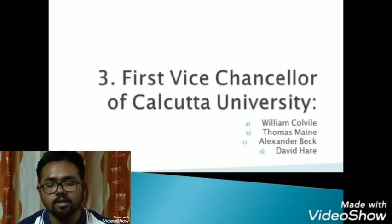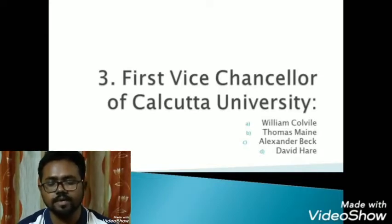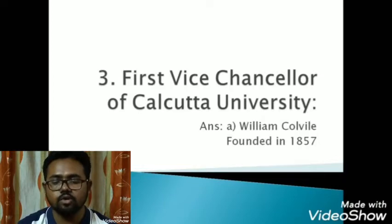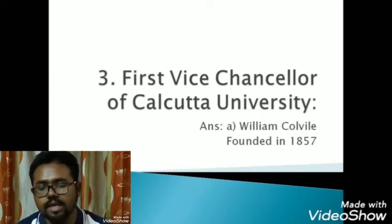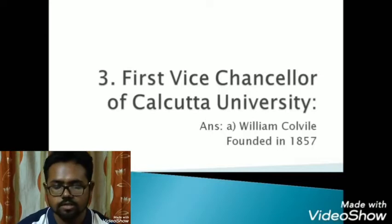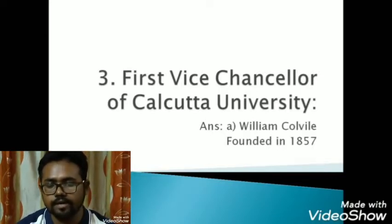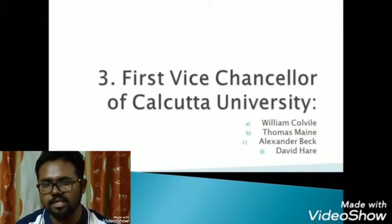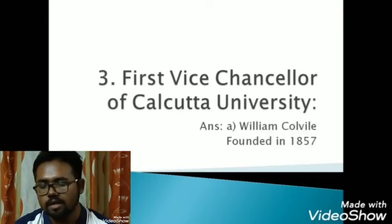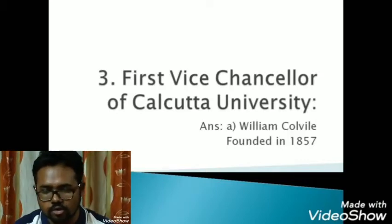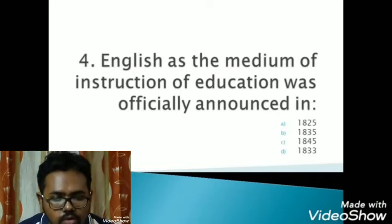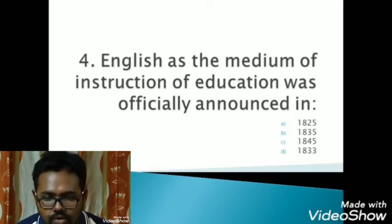The third question: the first Vice-Chancellor of Calcutta University was — option A: William Colville, option B: Thomas Maine, option C: Theodore Beck, and option D: David Hare. The answer is option A, William Colville. Calcutta University was founded in 1857. It is important to note that David Hare founded the Hindu College in 1817.